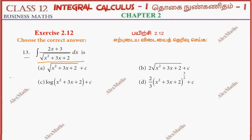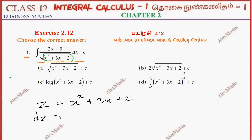We have to do the entire denominator term as z. We have to do the substitution. So let z equal to x square plus 3x plus 2. On differentiation, dz is 2x plus 3 into dx.